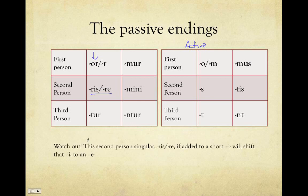One thing to watch out for: the second person singular 'ris/re' ending — if added to a short 'i,' that 'i' will shift to an 'e.' I'll point out where those are, but just beware this ending can sometimes cause a little changing to your stem or tense marker.